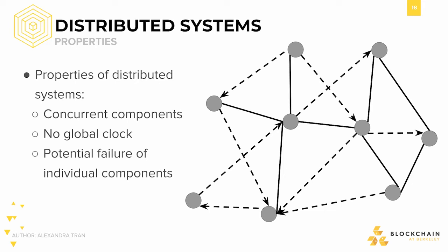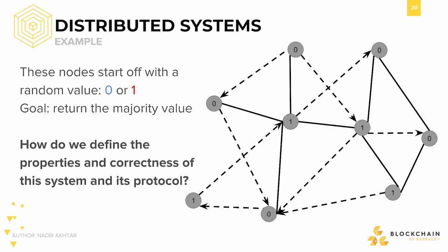In the next section, we're going to be looking at how we distinguish a working distributed system from a faulty one. This graph shows a classic example problem from distributed systems. Consider an arrangement of an odd number of nodes. Imagine that each node randomly starts off with one of two values, zero or one. This is known as a binary consensus problem, as there are only two possible inputs for each node and only two possible outputs for the entire network. The goal of this system is to, through messages and computation, return the majority value among all nodes. From looking at this graph, you can easily tell that the answer must be zero, given that there are five zeros and only four ones.